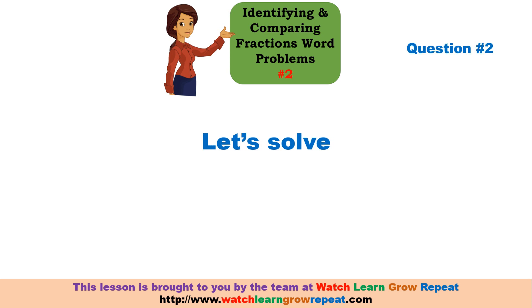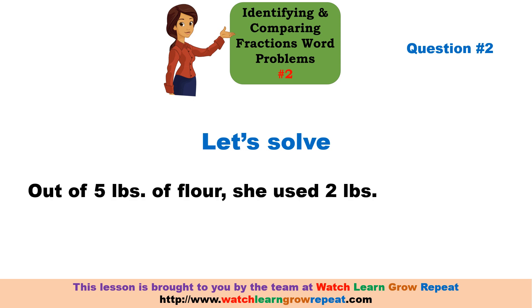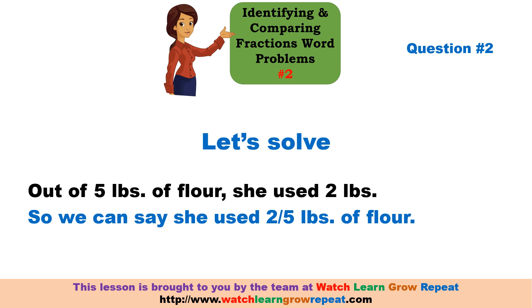Let's solve this problem. The problem tells us that out of the five-pound bag, Jim's mom used two pounds to bake a cake. So we can say she used 2/5 of the flour.